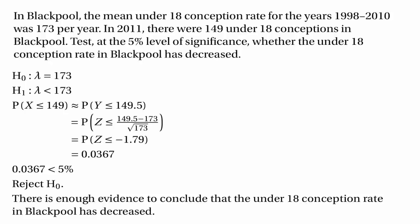One important thing to note: we used a continuity correction when using the normal distribution to approximate the Poisson distribution. You always have to make a continuity correction when using a continuous random variable to approximate a discrete one. That's because if x is discrete and y is continuous, the probability that x equals 149 will not equal the probability that y equals 149 — in fact the probability that a continuous random variable equals exactly 149 is 0. The probability that x equals 149 is approximately the same as the probability that y is between 148.5 and 149.5.